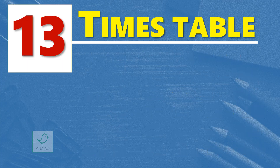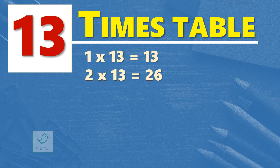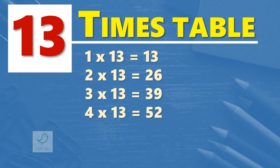13 times table. 1 times 13 is 13. 2 times 13 are 26. 3 times 13 are 39.